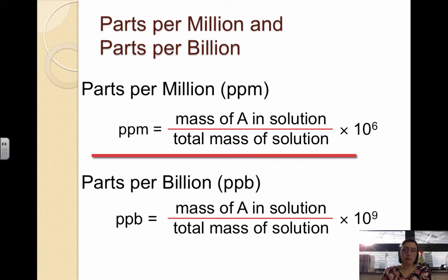If a solution was one ppm, one part per million, that means it would be one gram of solute per one million grams of solution. Notice that it's a very dilute solution.